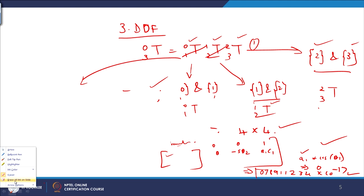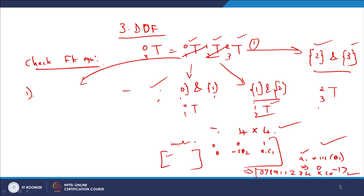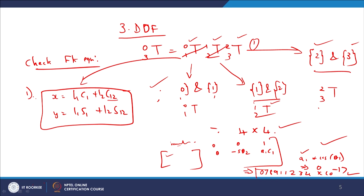There are two steps to clearly check the FK equation — whether it is right or wrong. For example, if you have x = L₁cos(θ₁) + L₂cos(θ₁₂) and y = L₁sin(θ₁) + L₂sin(θ₁₂), where cos(θ₁₂) = cos(θ₁+θ₂) and sin(θ₁₂) = sin(θ₁+θ₂), we need to test whether this forward kinematic equation is correct.